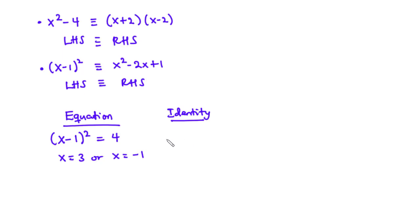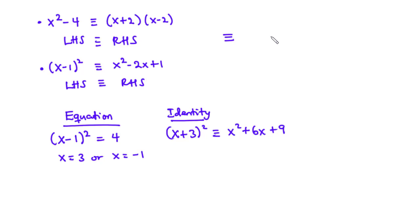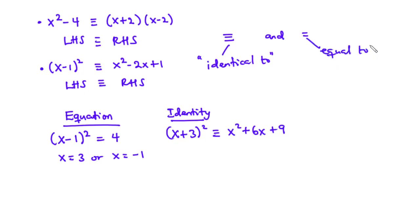For example, (x + 3)² is identical to x² + 6x + 9. In the course of our calculation, we are going to interchange the symbols — that is, the 'identical to' symbol and the 'equal to' symbol. So in the course of our calculation we are going to interchange the two.